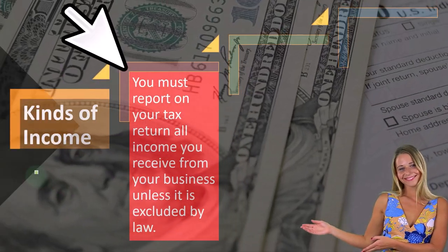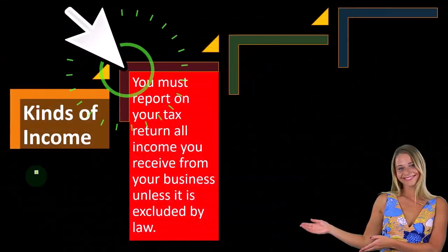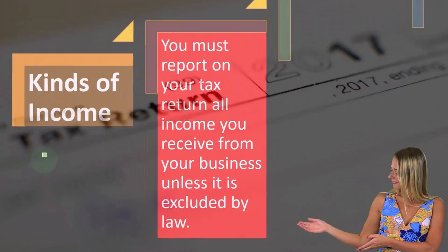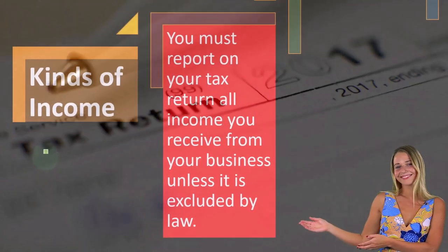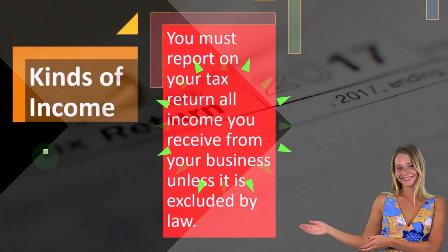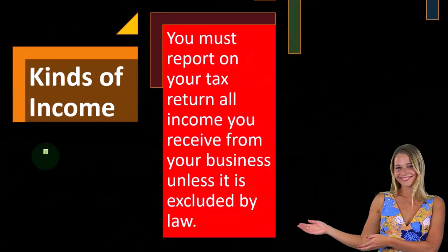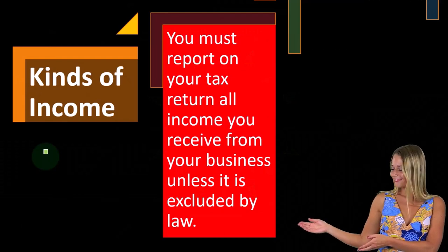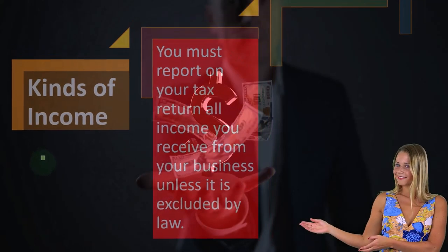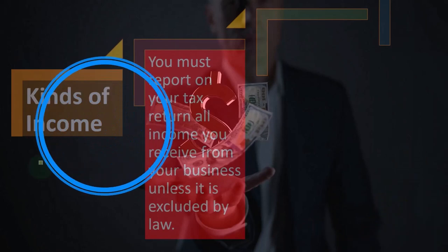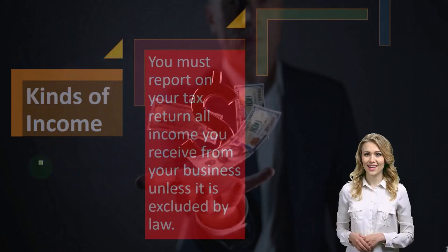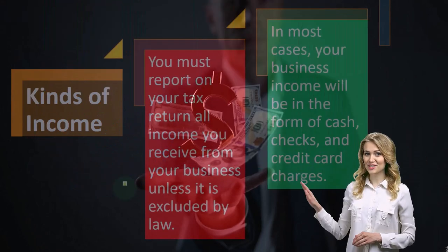Kinds of income. You must report on your tax return all income you receive from your business unless it is excluded by law. That's the general stance of the IRS. Normal income is the same as business income — you've got income unless the IRS says otherwise, they want a piece of it.